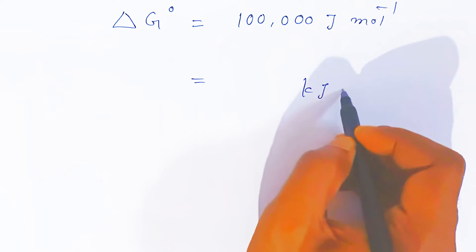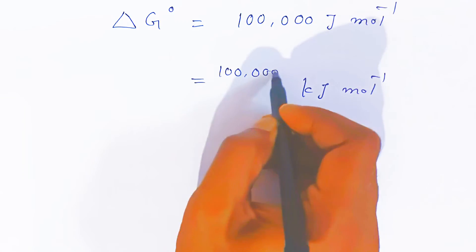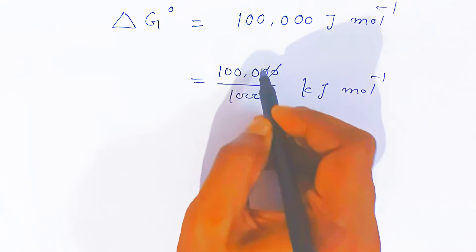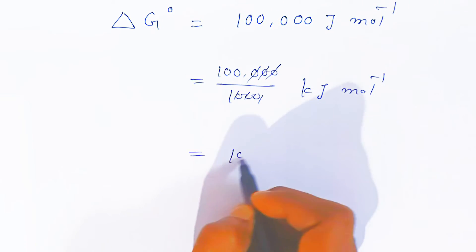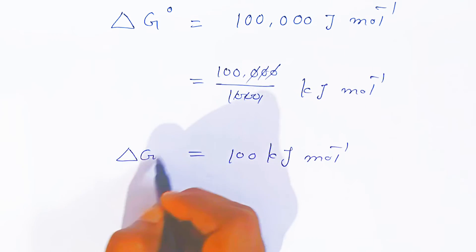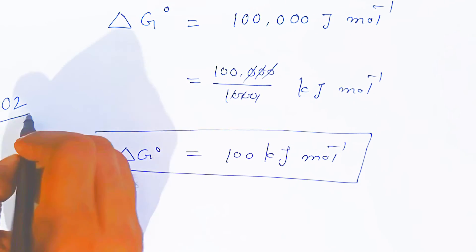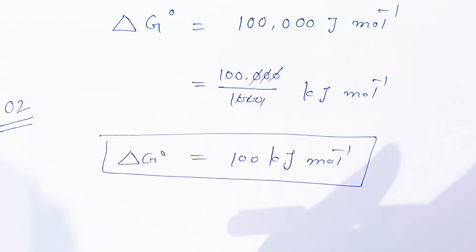If you want to convert into kilojoules per mole, divide this value by 1000, so you will get 100 kJ per mole. This way you can calculate the standard Gibbs energy for two marks questions they will ask in examination.